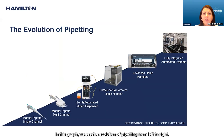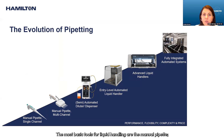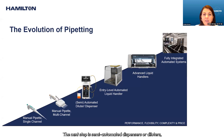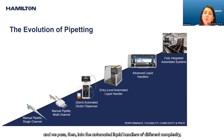In this graph we see the evolution of pipetting from left to right. The most basic tools for liquid handling are the manual pipettes — these can be single or multi-channel pipettes. The next step are semi-automated dispensers or diluters.